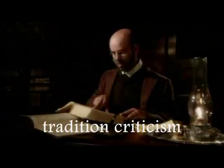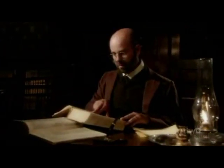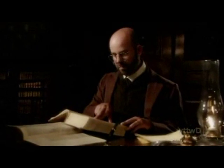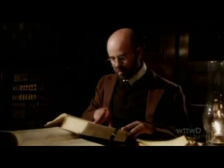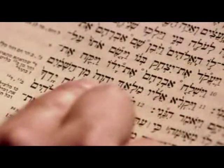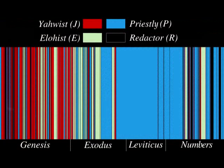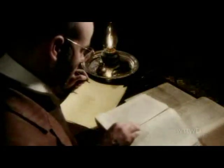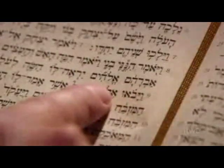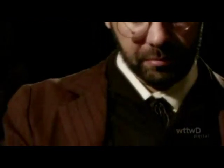We've talked a little bit about form criticism and tradition criticism. But redaction criticism grew out of a kind of weariness with some of these other forms of biblical criticism and their constant fragmentation of the biblical text into older sources, older genres, or older units of tradition in order to map out a history of Israelite religion. These other methods seem to pay very little attention to the text in its final form and the process by which the text reached its final form.